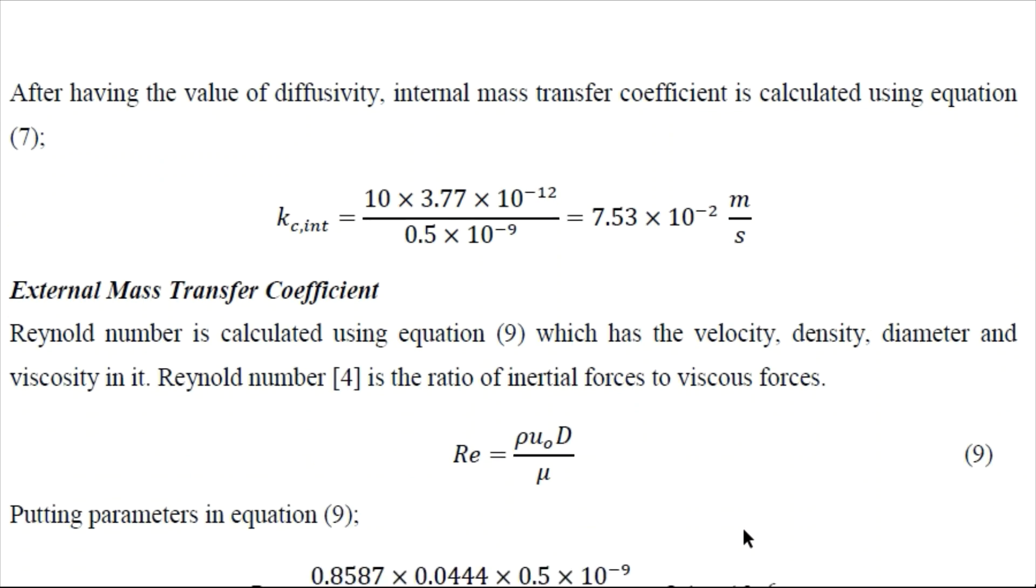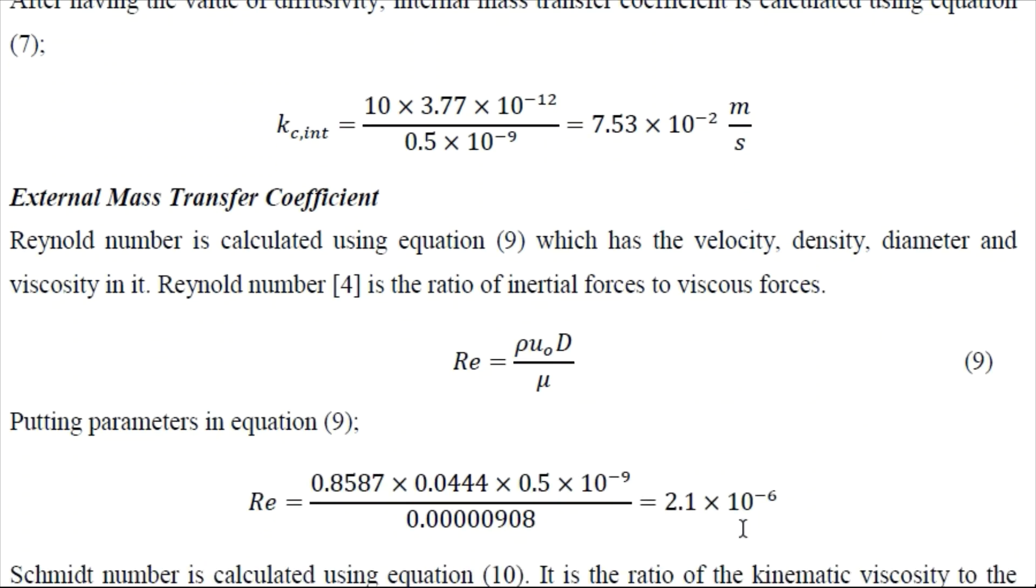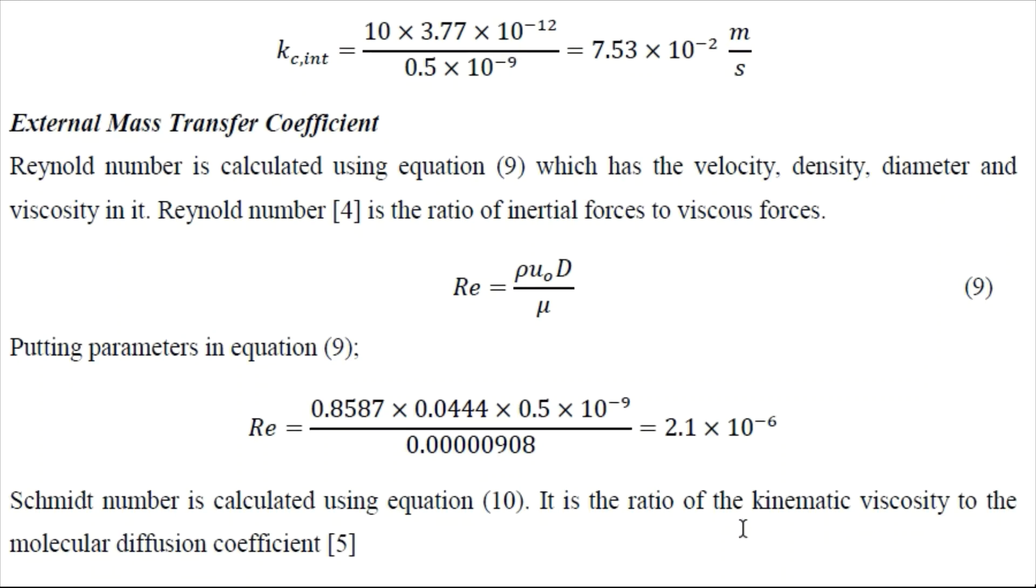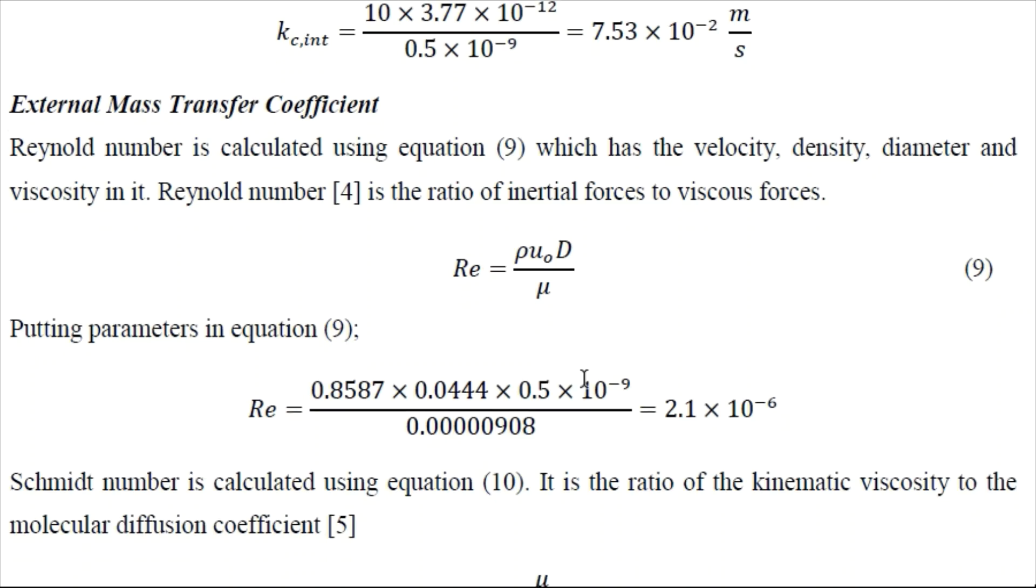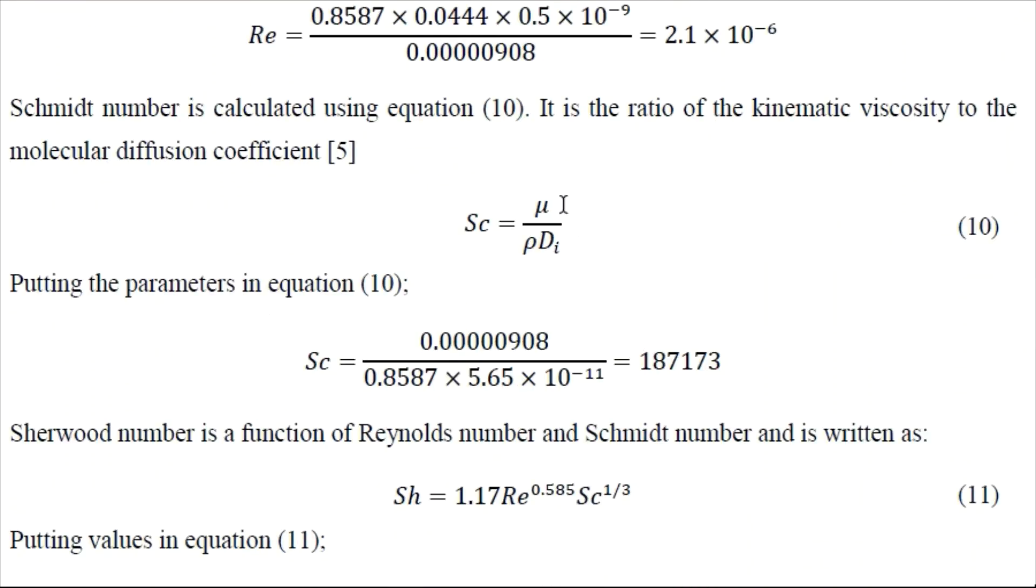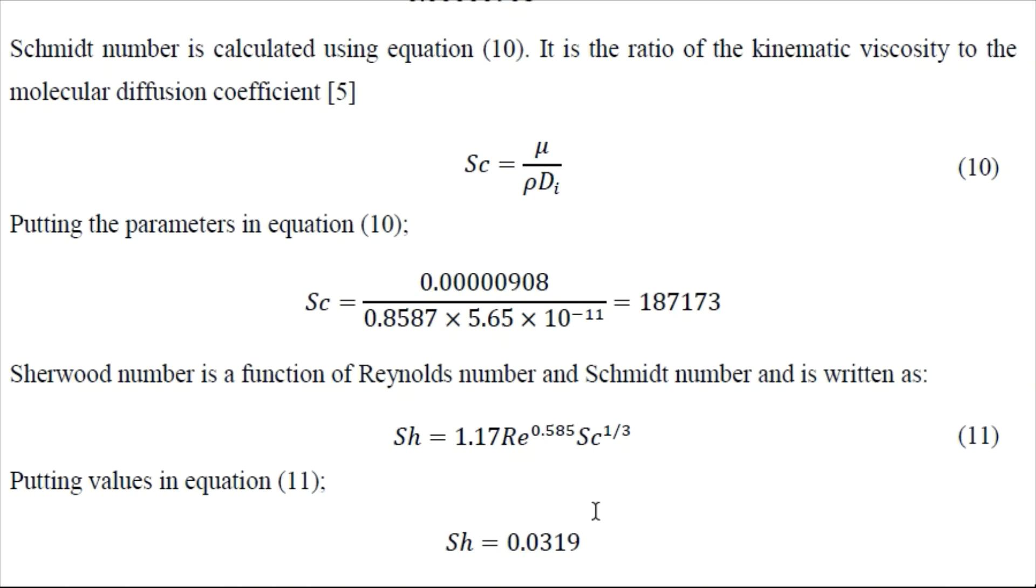So similarly we can determine the external mass transfer coefficient which basically relies on Reynolds number and Schmidt number. So we can determine the Reynolds number using the given parameters and we also determine the Schmidt number that is basically a combination of different physical properties. So using these two dimensionless numbers we can find the Sherwood number.